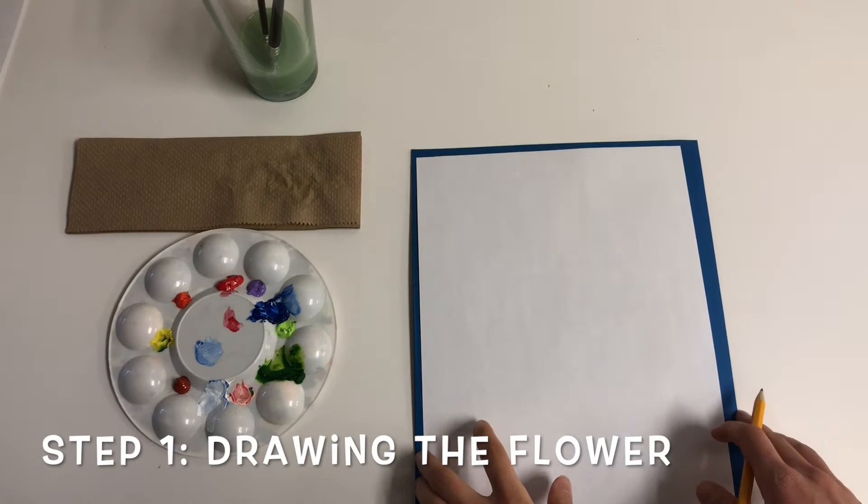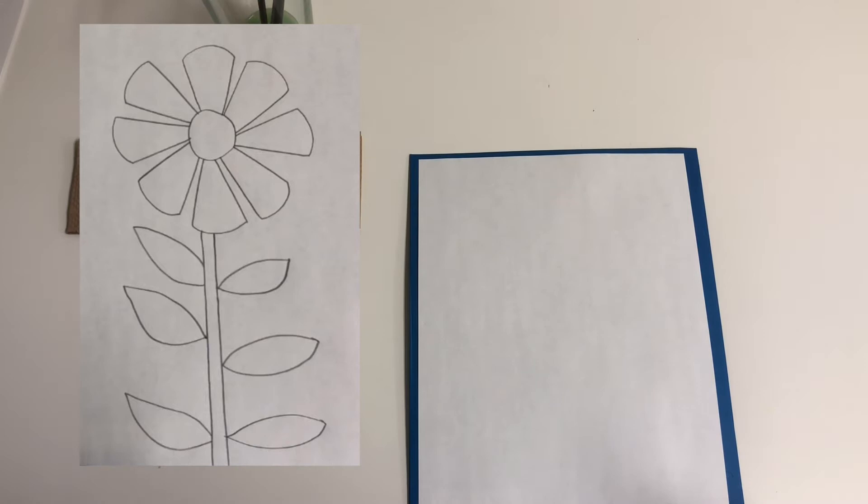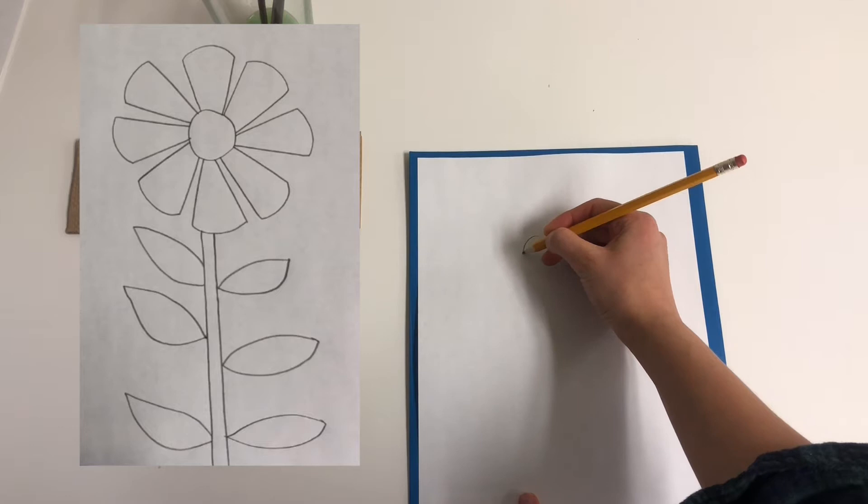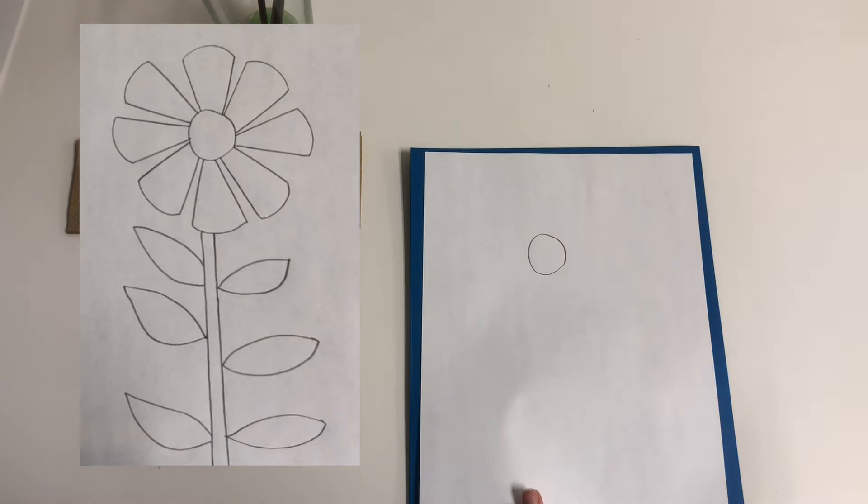Okay, so the first step is we are going to draw the middle of the flower, which is a circle shape, towards the top area of the paper. So I am going to take my pencil and draw a circle shape about the size of a quarter, and it doesn't have to be perfect. In fact, mine is not, and that's okay because this is a flower, and this is something that's more organic and living in nature, so it doesn't have to be perfect.